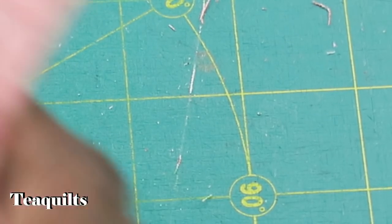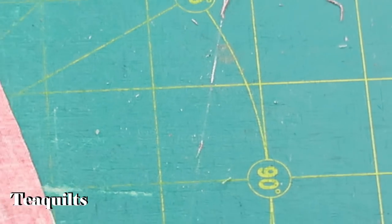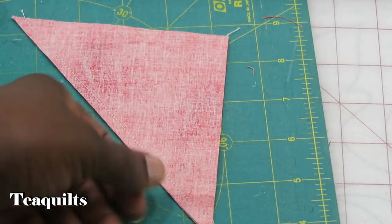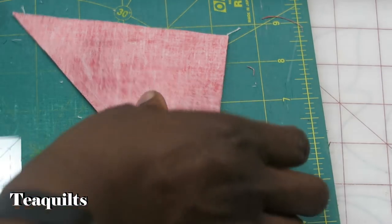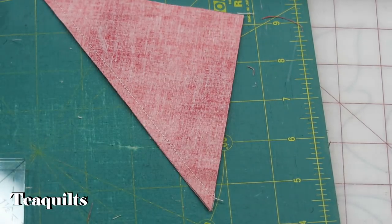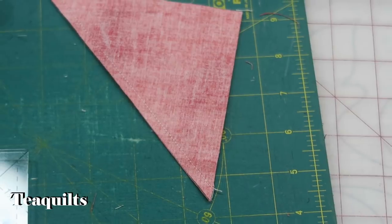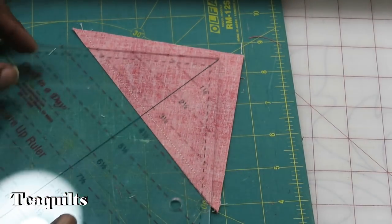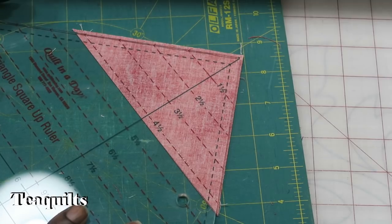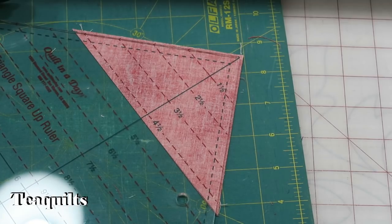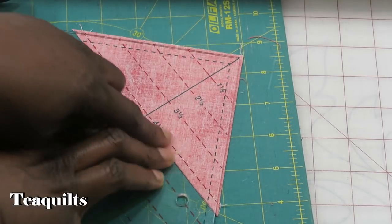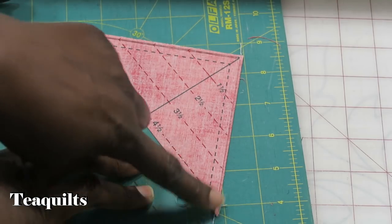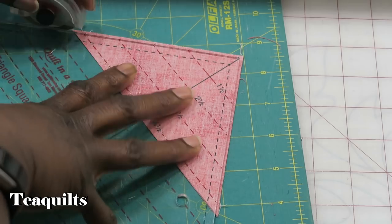I think you missed me trimming that dog ear, so we'll do it again. Let me zoom out so you can see me square this unit up first. Four and a half inch on the line - you can center it or just make sure you're straight on the line here. Your four and a half inch line is on your seam line and you've got room on both sides.